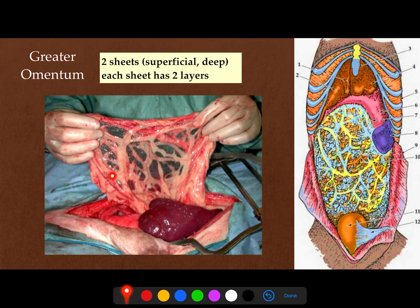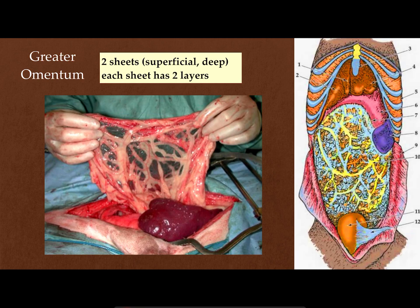Now we will speak about the greater omentum. The greater omentum is apron-like, covering the viscera. Here is the stomach, here is the liver, here is the spleen, and all of this part is the greater omentum. So when we open the abdomen, the only organs we will see are the liver, stomach, spleen, and urinary bladder — the rest of the intestine will be covered by this greater omentum.